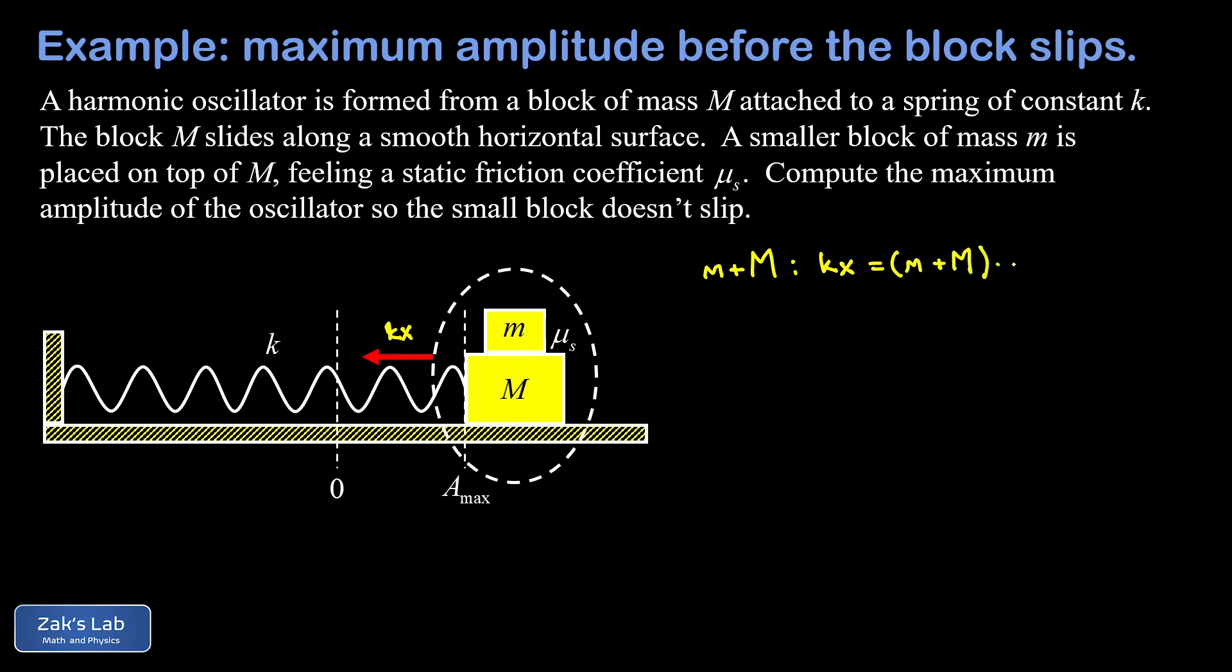The total mass that we're accelerating is little m plus big M, and we're going to solve for a. With our x location being equal to the maximum amplitude, I can write the left hand side is k times A_max and we're going to divide by the sum of the two masses. We find our acceleration is k times A_max divided by the sum of the two masses.